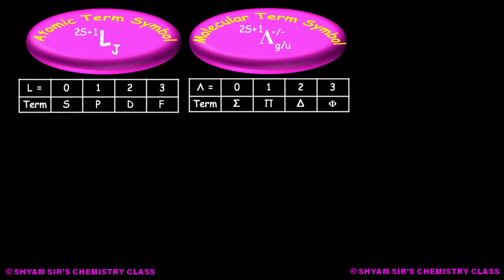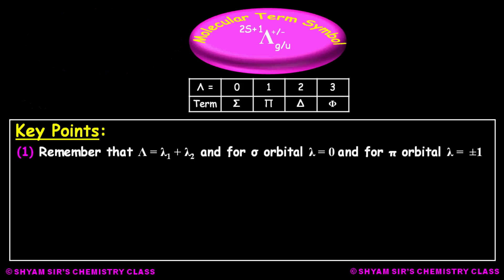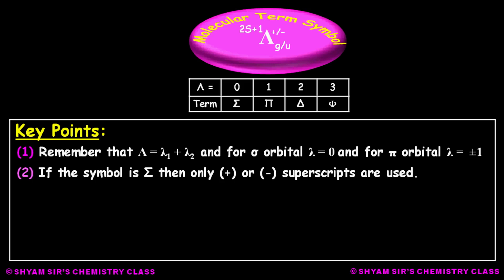We need to know a few key points for determination of the molecular term symbol. First, total Λ is calculated by simple addition of individual Λ values of each orbital. You must remember: for a sigma orbital Λ equals 0, and for a pi orbital Λ equals ±1. Also remember: plus or minus superscripts are used only when the symbol is sigma; for pi, delta, or phi you do not use plus or minus signs.